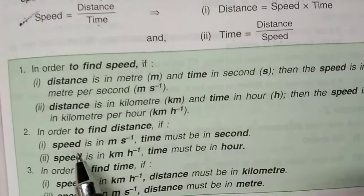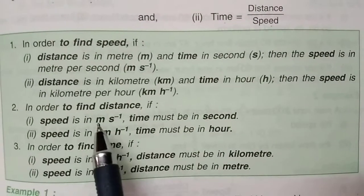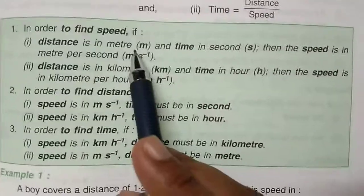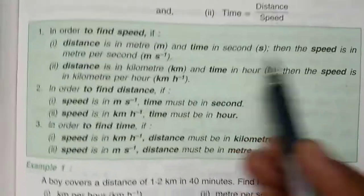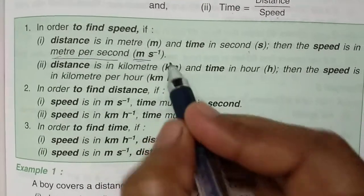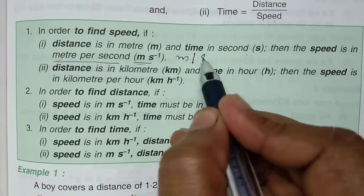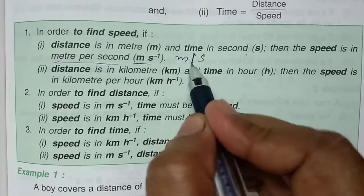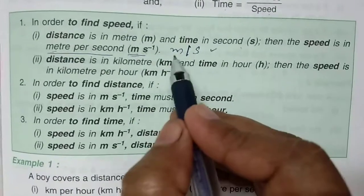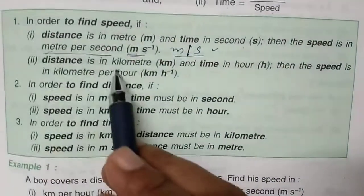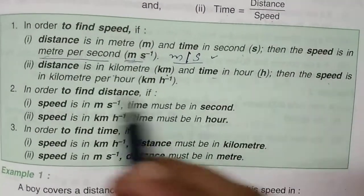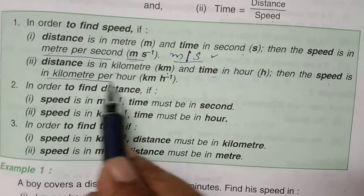We have to remember the units always. If the distance is in meters and time is in seconds, the speed will always be in meters per second — written as m/s or m·s⁻¹. If the distance is in kilometers and time is in hours, then the speed is kilometers per hour.